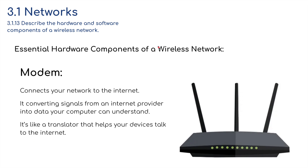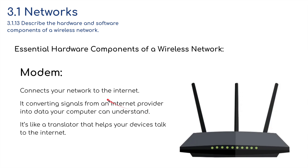There are several components in a wireless network. Starting with a modem — this is the thing that connects your network to the internet, whether in your house or a small office. It converts signals from an internet service provider into data your computer can understand. It's like a translator that helps your device talk to the internet.